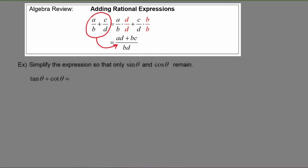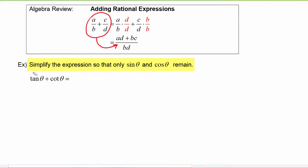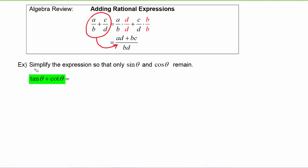Now where this could get used is in an example like this one, where we have to simplify the expression so that only sine theta and cosine theta remain. Here we have tangent theta plus cotangent of theta, and we want to use the identities to turn that into a new expression that only has sine thetas and cosine thetas in it.